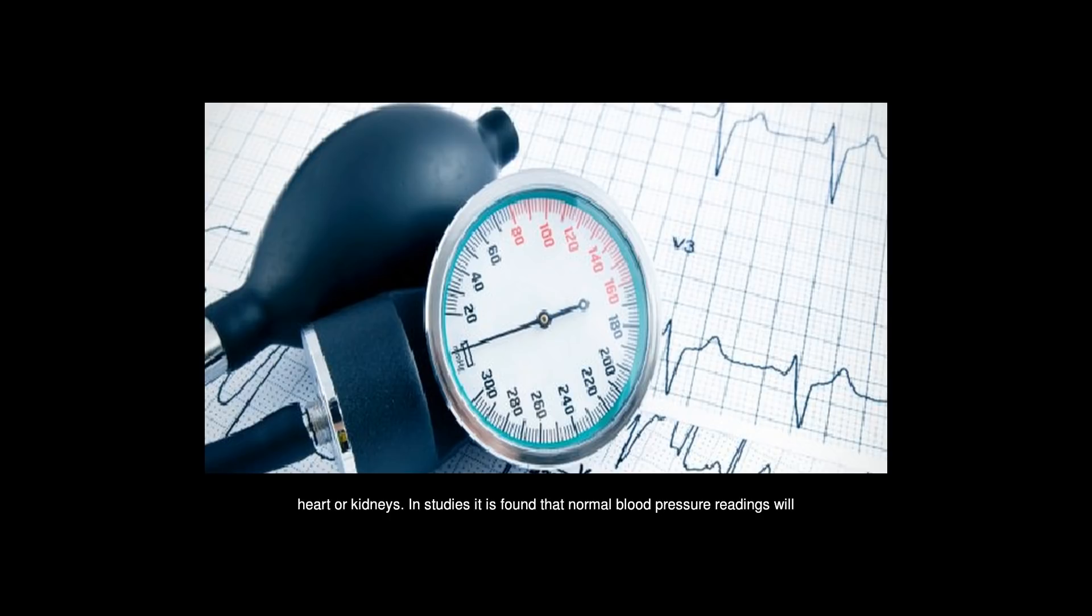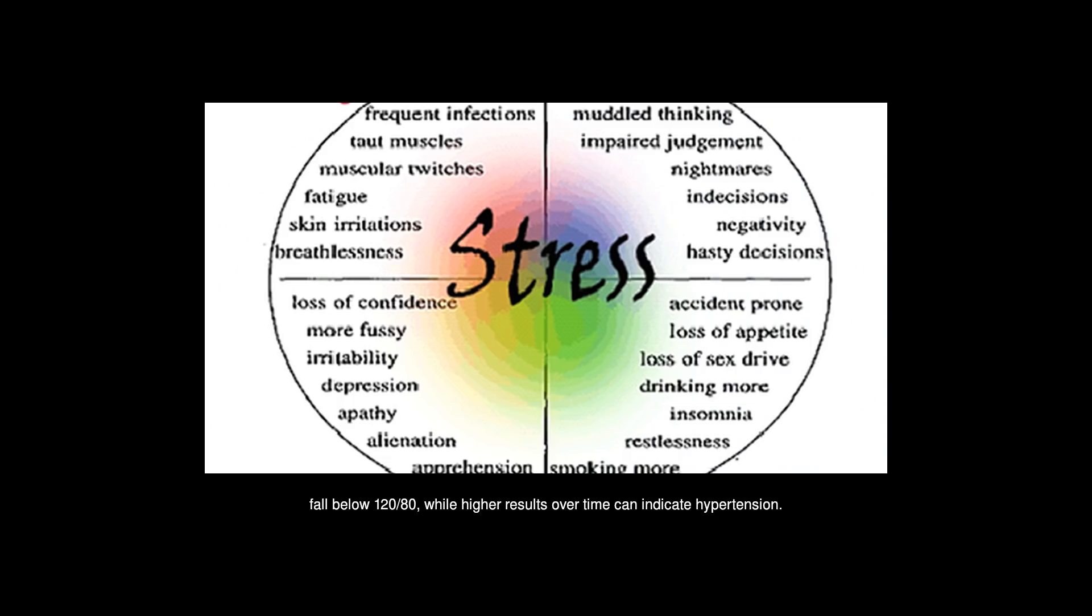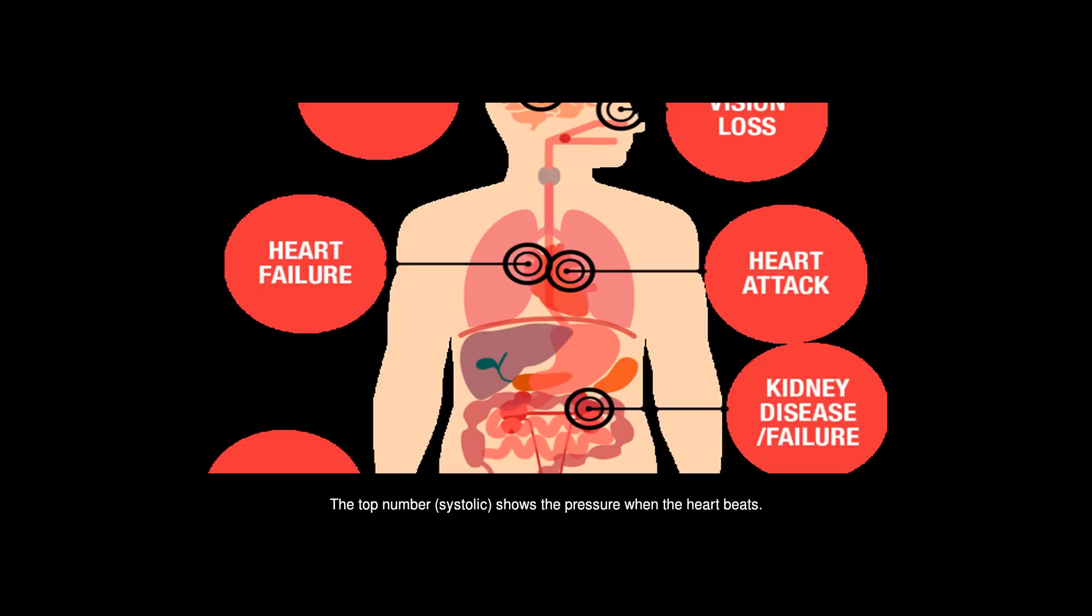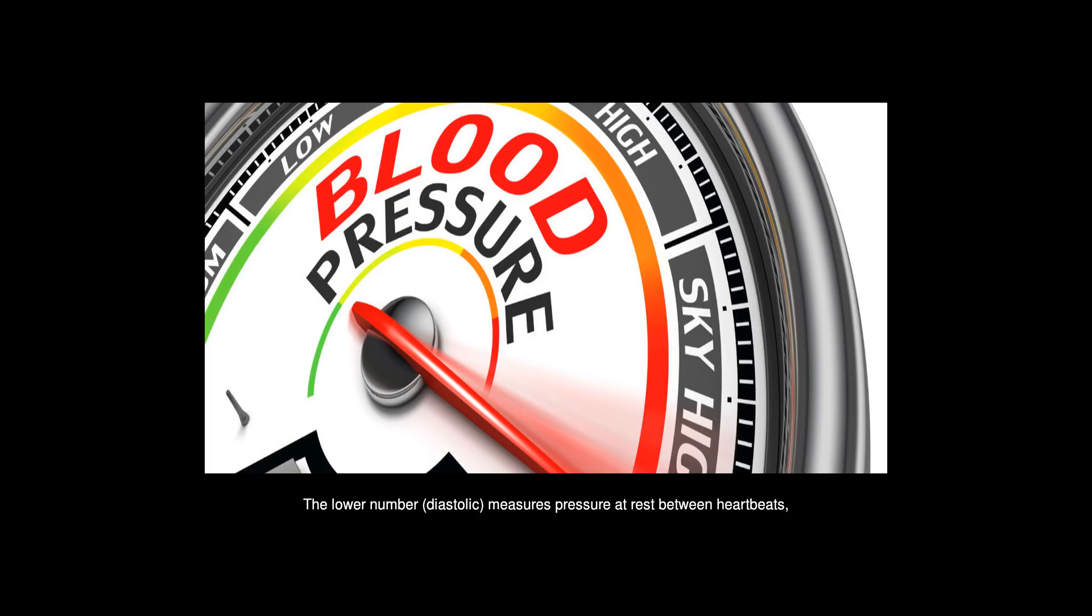In studies it is found that normal blood pressure readings will fall below 120/80, while higher results over time can indicate hypertension. In most cases, the underlying cause of hypertension is unknown. The top number, systolic, shows the pressure when the heart beats. The lower number, diastolic, measures pressure at rest between heartbeats, when the heart refills with blood. Occasionally, kidney or adrenal gland disease can lead to hypertension.